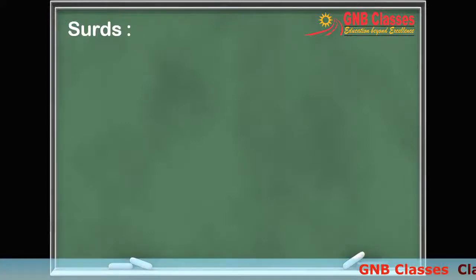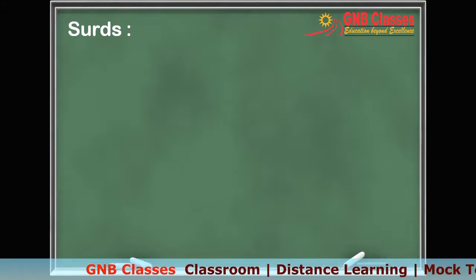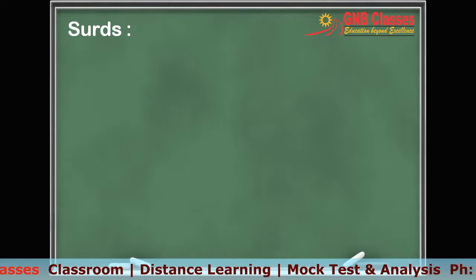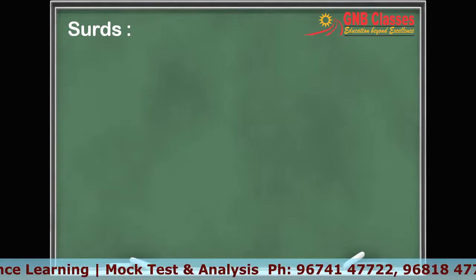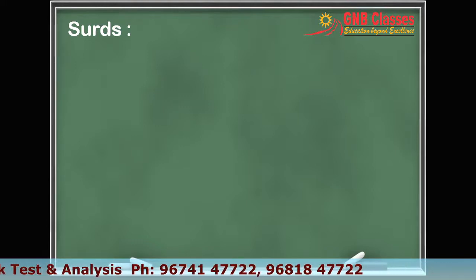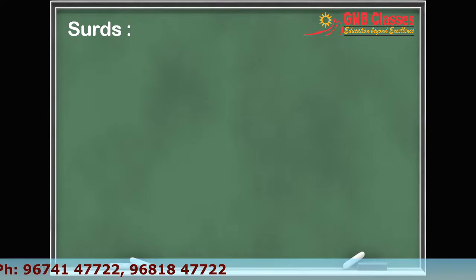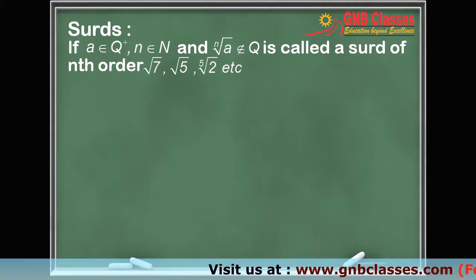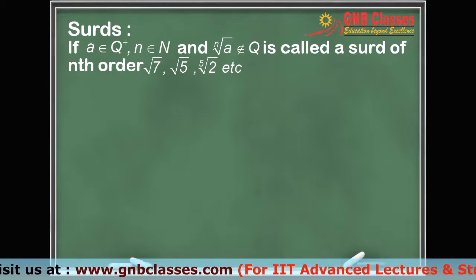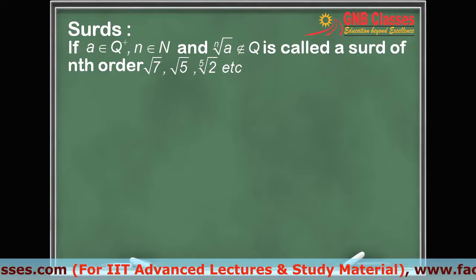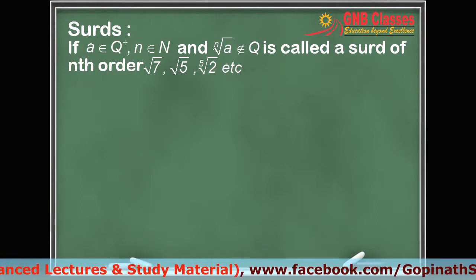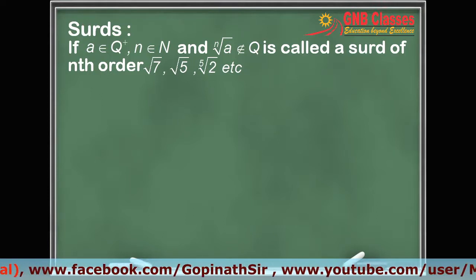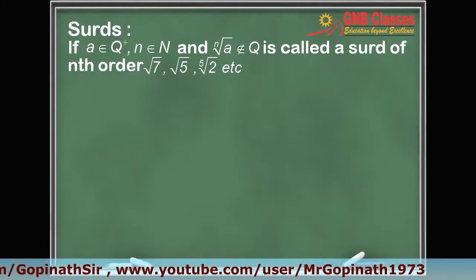If we choose a positive rational number a and a natural number n, then the nth root of a is called a surd of nth order, provided the nth root of a is not equal to any rational number. For example, root 7, root 5, and fifth root of 2 are surds: root 7 is a surd of order 2, root 5 is a surd of order 2, and fifth root of 2 is a surd of order 5. There are five kinds of surds.